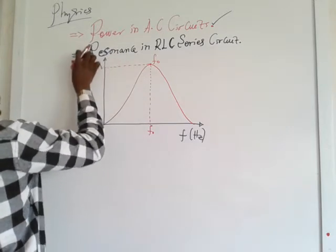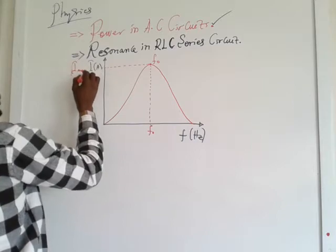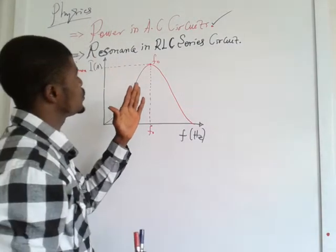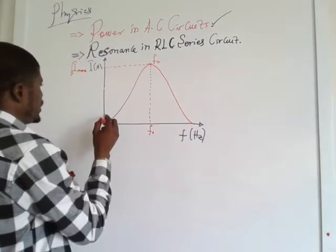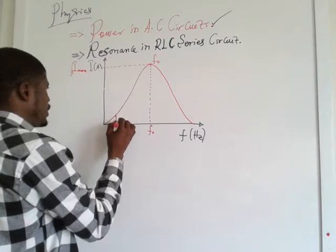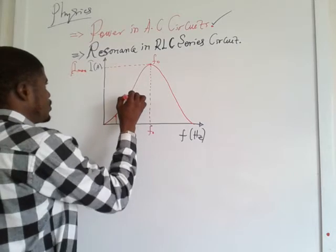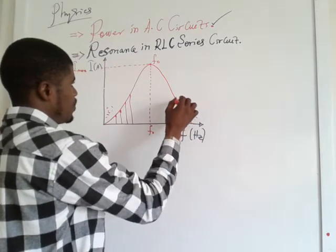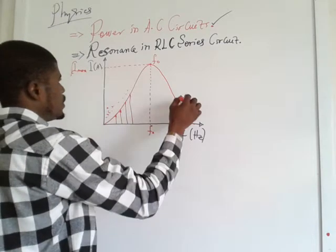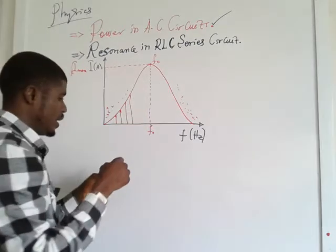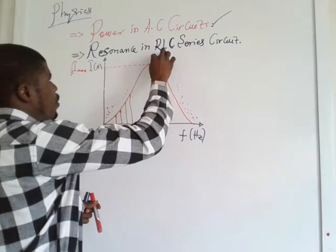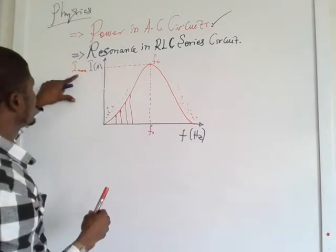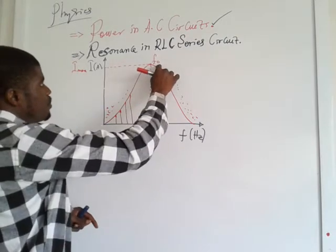Here is the maximum current, your I-maximum. It is believed that in an RLC series circuit, at both sides of the graph the impedance is greater at the ends. As you go up toward the peak, the impedance is decreasing until you get to a point where the impedance is almost zero. At this point you have your peak, maximum current. The frequency at which you have that maximum current is called the resonance frequency, F-naught.